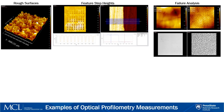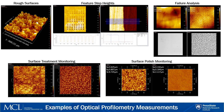Optical profilometry can be used in failure analysis. Here we are observing an electrical contact pre- and post-failure. Another valuable use is measuring the effects of surface treatments or polishing steps. Changes in the surface microstructure can be observed after a surface treatment, and roughness values can be compared pre- and post-polishing. In the bottom right image set, we can see that the surface roughness parameter is superimposed on the image.